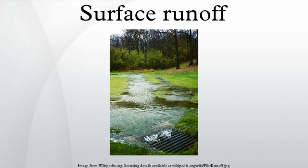Surface runoff is the flow of water that occurs when excess water from rain, meltwater, or other sources flows over the Earth's surface. This might occur because soil is saturated to full capacity, or because rain arrives more quickly than soil can absorb it.